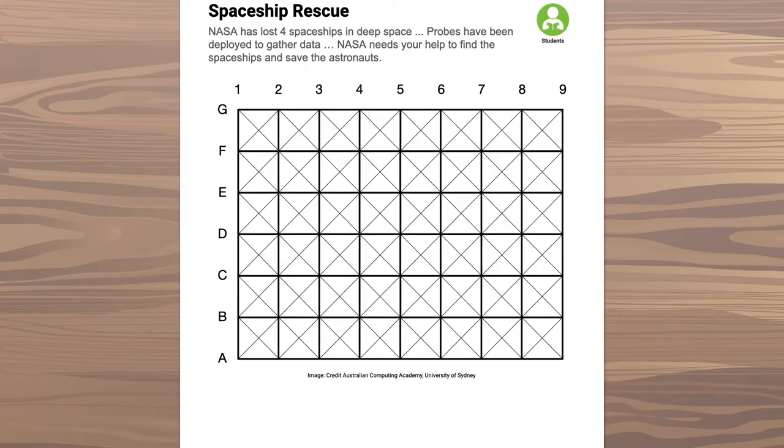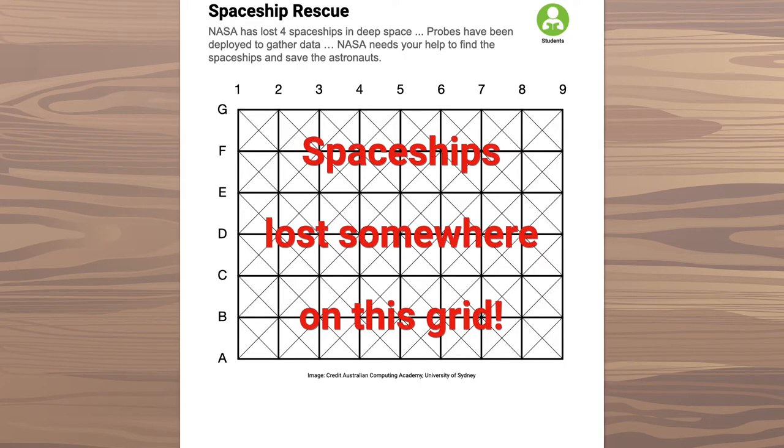In this activity, your job is to find the location of four missing spaceships, each located somewhere on the grid.